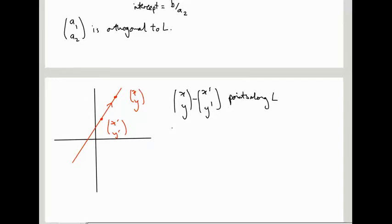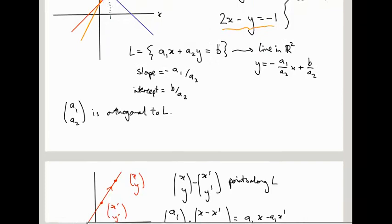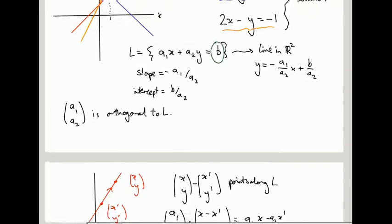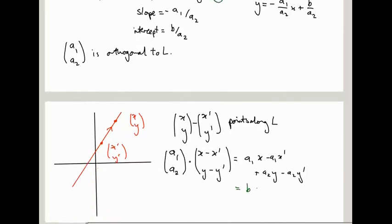So let's do the dot product, (a1, a2), dotted with this difference. Well, the difference is (x minus x prime, y minus y prime). This dot product is a1x minus a1x prime, plus a2y minus a2y prime. And let's look at this. a1x plus a2y is b by the equation for L. So this is b, and a1x prime plus a2y prime is also b because (x prime, y prime) also lives on the line L. So you get b minus b, which is 0. So the dot product is 0.